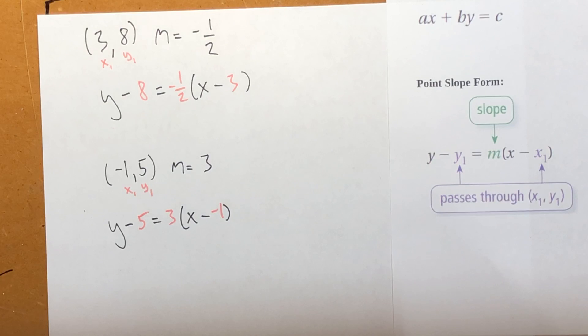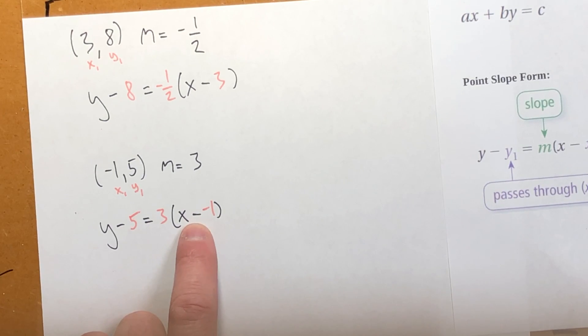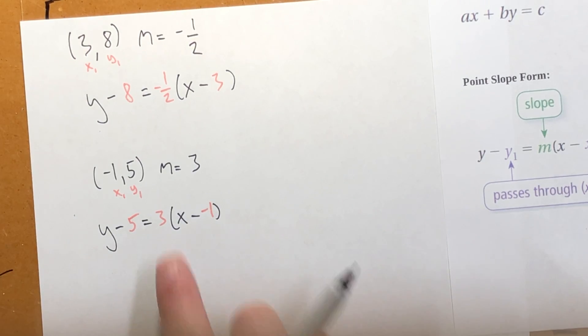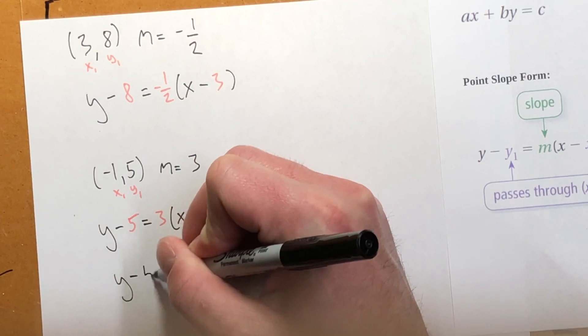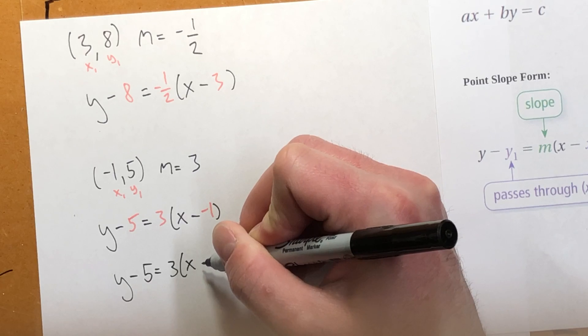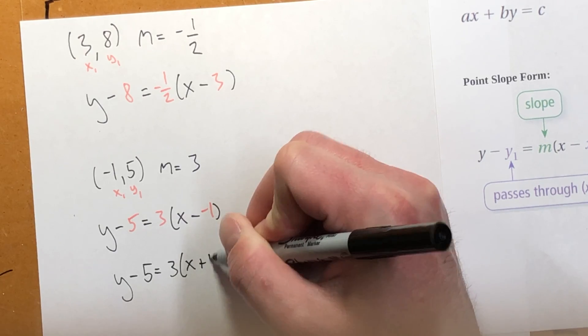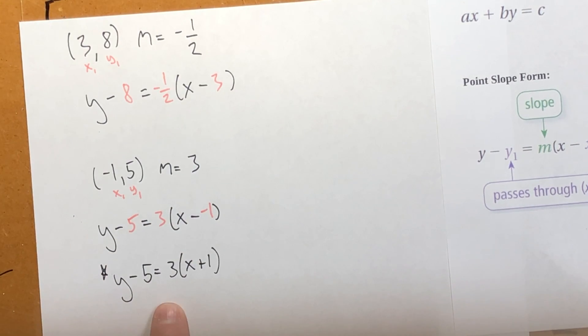Now when that happens, we should clean this up a little bit. Because subtracting a negative number is kind of goofy. The negatives cancel out. It's really just addition. So my final answer here would be y minus 5 equals 3 times the quantity of x plus 1. And this would be my final equation.